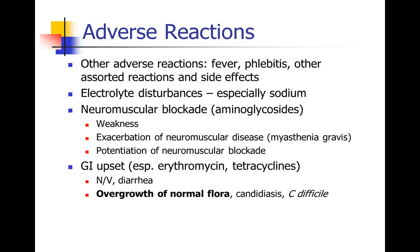There are many other adverse reactions described with antibiotics: fever, phlebitis, and others. Antibiotics can disturb electrolyte balances, especially sodium balance. They can augment neuromuscular blockade, especially the aminoglycosides — this can be an issue in postoperative weakness or in patients with underlying neuromuscular disease. Many antibiotics cause GI upset, either due to a direct effect on the GI tract causing nausea, vomiting, or diarrhea, or by killing off normal flora, allowing overgrowth of organisms normally kept in check.